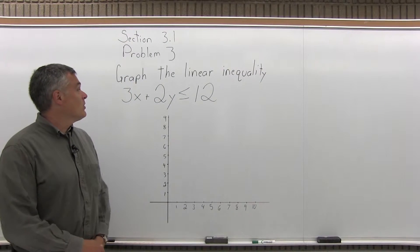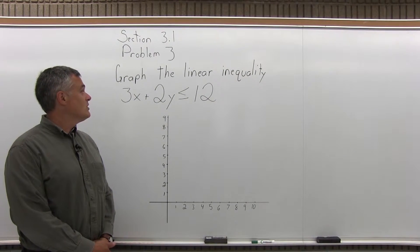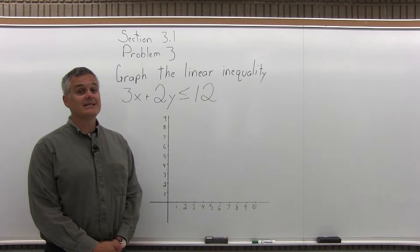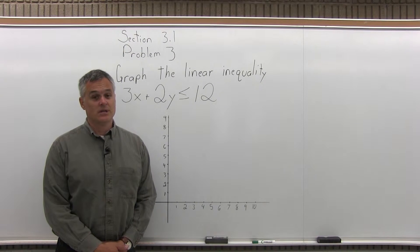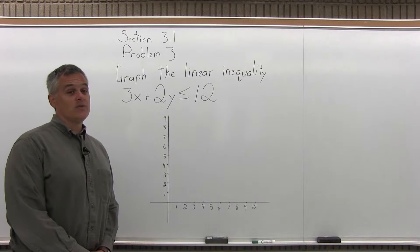This is Section 3.1, Problem 3. It says graph the linear inequality 3x plus 2y is less than or equal to 12. So to graph a linear inequality is a four step process.